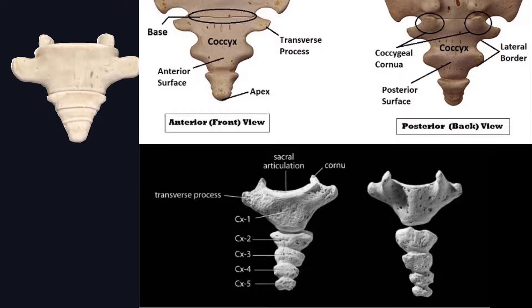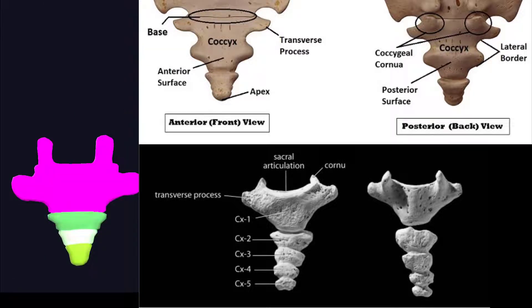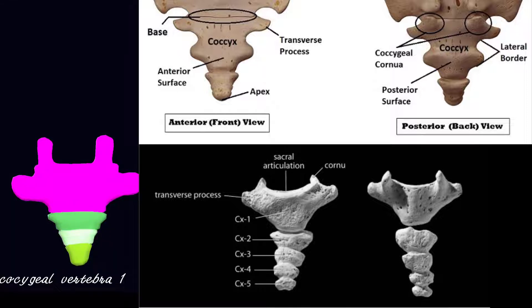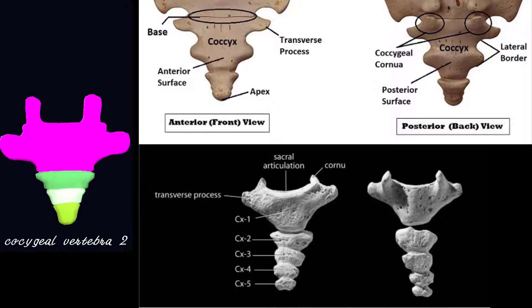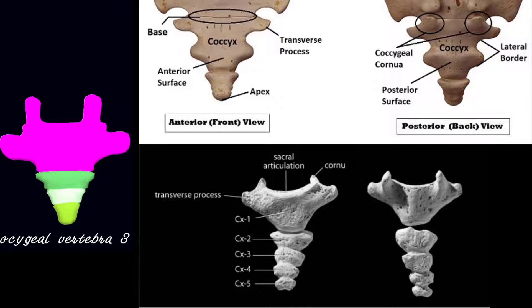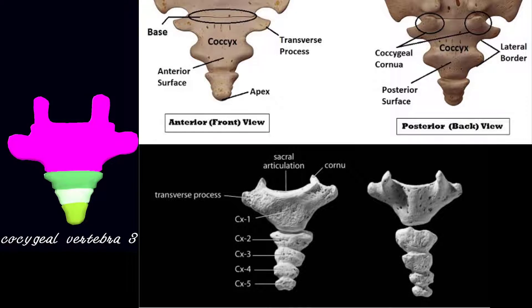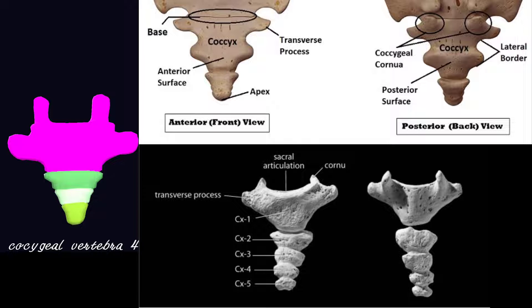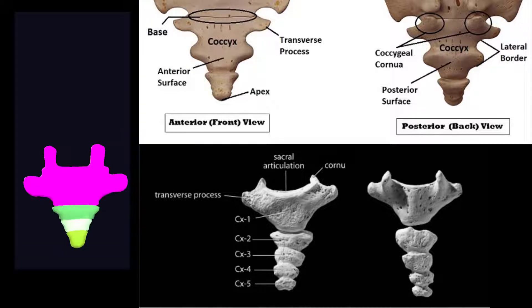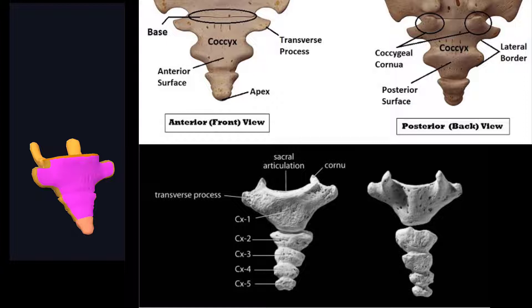To study the coccyx clearly, we have color-coded its parts. The pink color is coccyx vertebra 1, the green color is coccyx vertebra 2, the light green color is coccyx vertebra 3, and the lime green color is coccyx vertebra 4. So the coccyx has four parts and four surfaces.